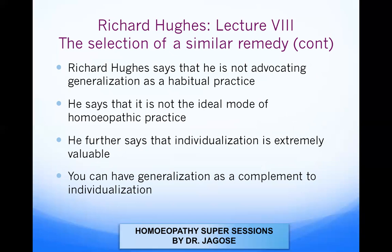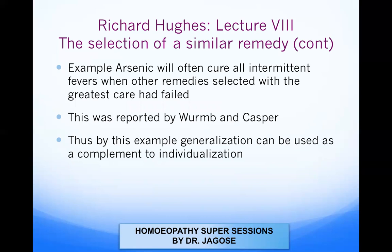Richard Hughes again tells us that individualization is extremely valuable; generalization can be used only as a complement to individualization. If you do not get the similarity, at least give a remedy with partial similarity through generalization rather than one with no similarity. For example, Arsenicum will often cure all intermittent fevers when other remedies selected with the greatest care have failed. This generalization was reported by Womb and Casper.